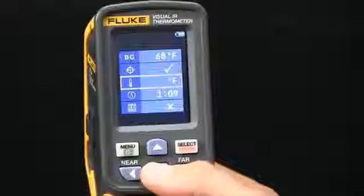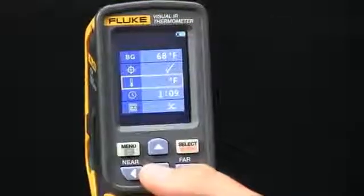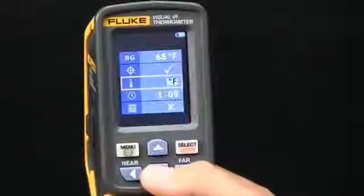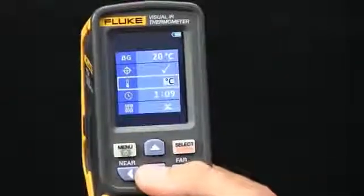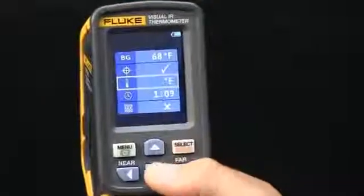The next option that you have is the ability to determine whether you want to be taking temperature readings in Fahrenheit or Celsius. Again, by hitting select and toggling up or down, you have the ability to change the metric.